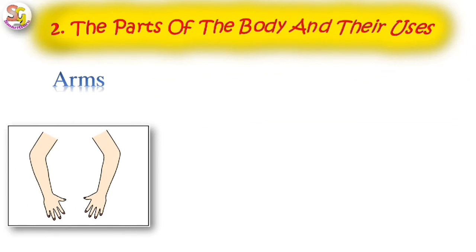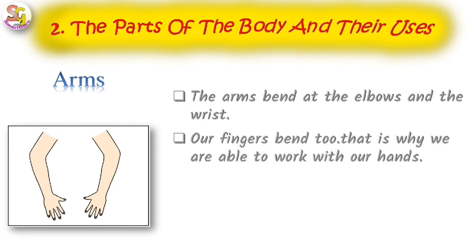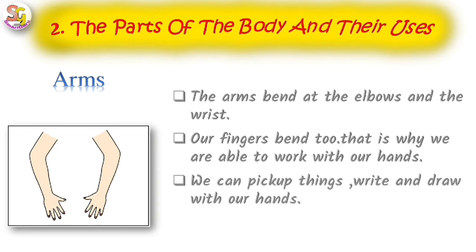The arms bend at the elbows and the wrist. Our fingers bend too — that is why we are able to work with our hands. We can pick up things, write, and draw with our hands. We clap our hands too.